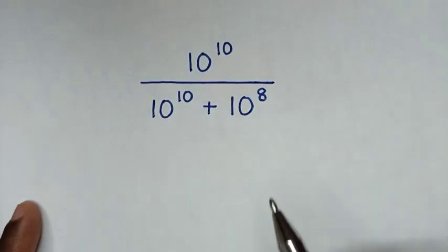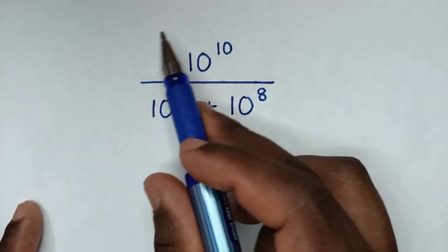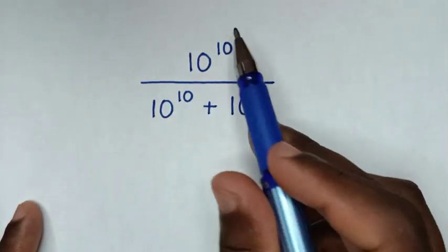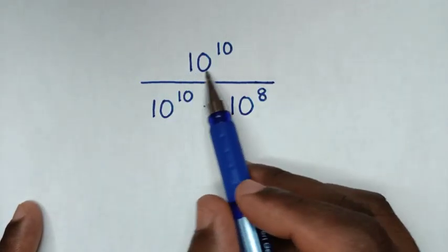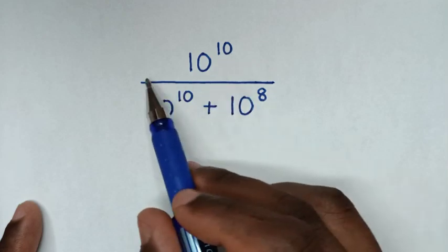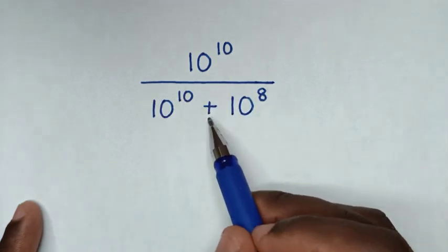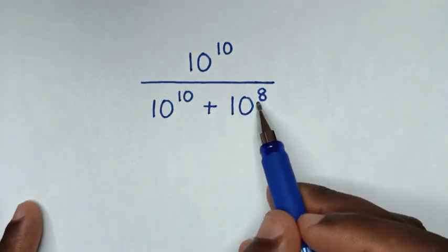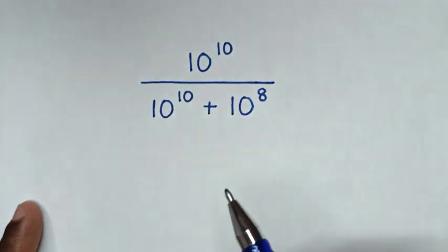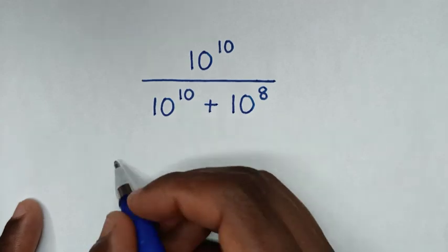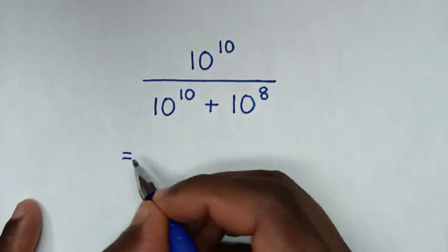Hello, you are welcome to solve this math problem which is 10 power 10 over 10 power 10 plus 10 power 8. So it will be equal to: